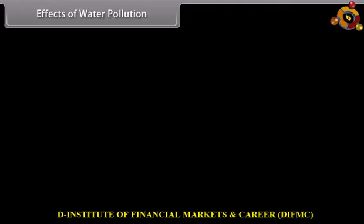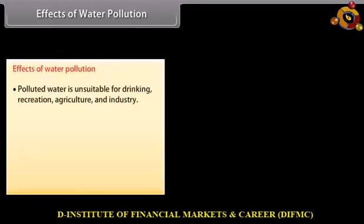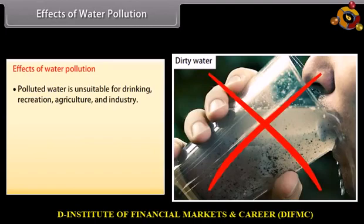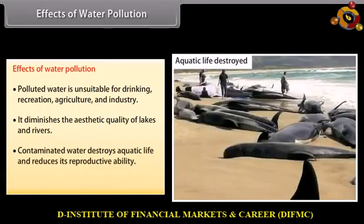Effects of water pollution. Polluted water is unsuitable for drinking, recreation, agriculture, and industry. It diminishes the aesthetic quality of lakes and rivers. Contaminated water destroys aquatic life and reduces its reproductive ability. It is also hazardous to human health.